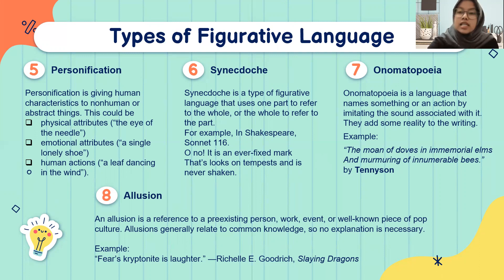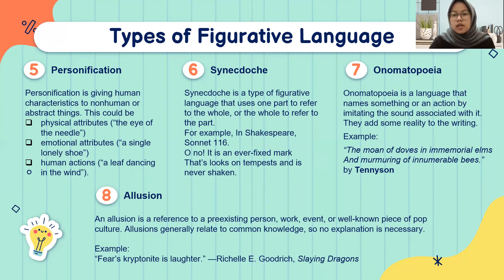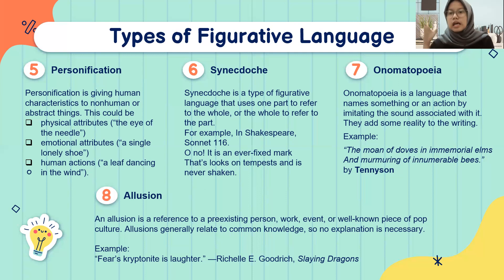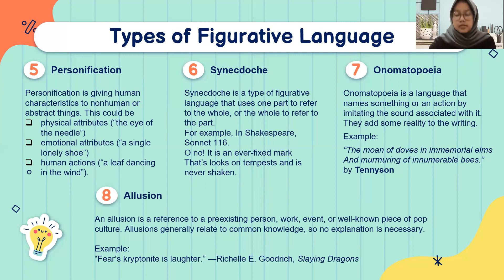The seventh type is onomatopoeia — language that names something or an action by imitating its associated sound. The name or action imitates the actual sound of the object. An example from literature: 'The moan of doves in immemorial elms and murmuring of innumerable bees.' 'Moan of doves' comes from the sound of doves, and 'murmuring of innumerable bees' imitates the buzzing sound of bees.